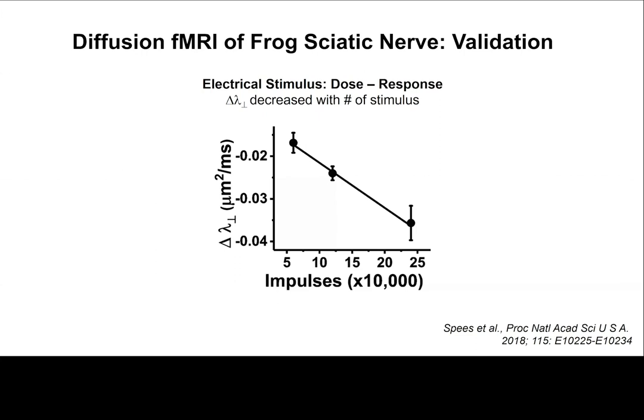To understand what this diffusion image signal change means, we performed experiments on isolated optic nerves using electrical stimulation. We found that the extent of decreasing radial diffusivity upon electrical stimulation is linearly proportional to the number of impulses given — suggesting this is indeed a marker of nerve activation.